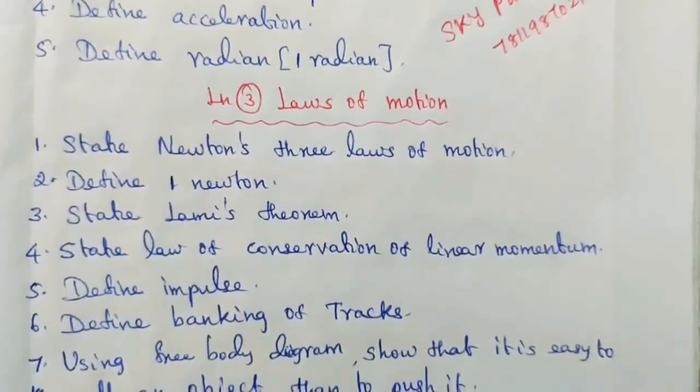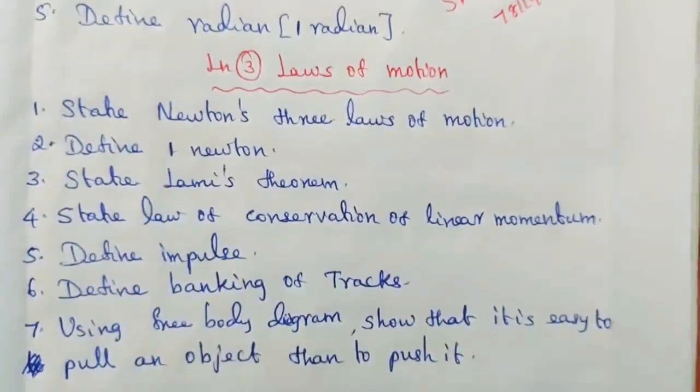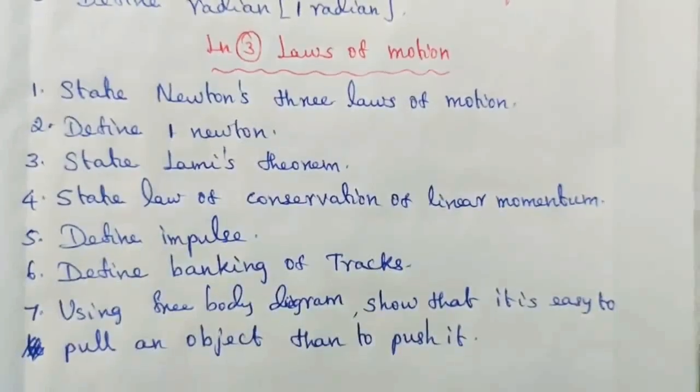Question 6: Define Banking of Tracks. Question 7: Using Free Body Diagram, show that it is easy to pull an object than to push it.